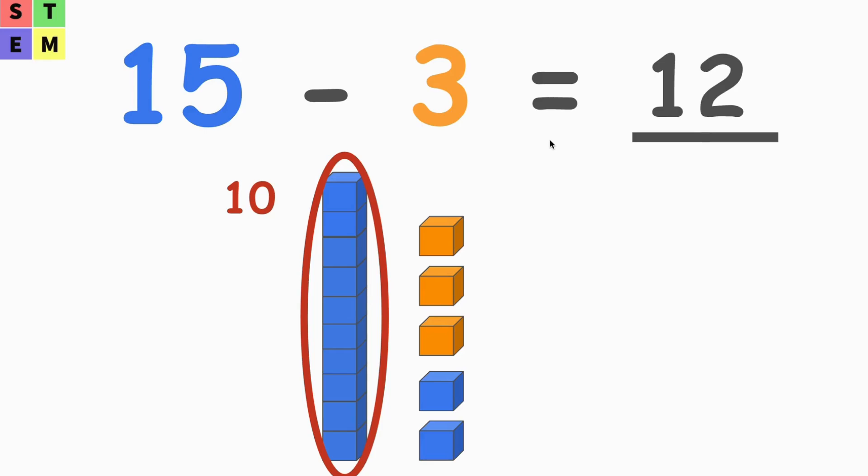So that's how we calculate 15 minus 3, which equals 12. Let's take a look at another example which is a bit more complicated.